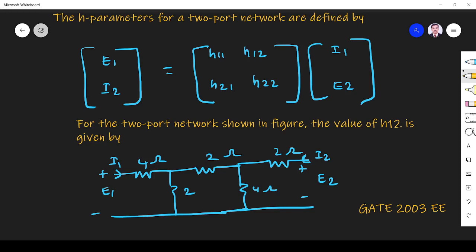The question is: the h parameters for a two-port network are defined by e1, i2 equals h11, h12, h21, h22, i1, e2. For the two-port network shown in figure, the value of h12 is given by.